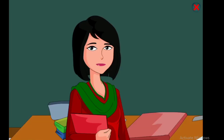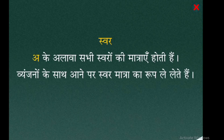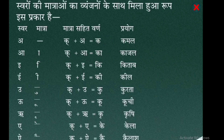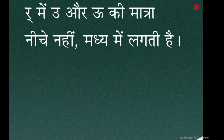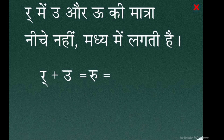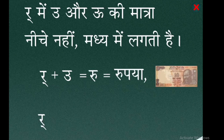Bacchon, ab swaron ki matraen jaante hain. अ ke alawa sabhi swaron ki matraen hoti hain. Vyanjnon ke saath aane par swar matra ka roop le lete hain. Swaron ki matraon ka vyanjnon ke saath mila hua roop is prakar hai. Yeh bhi jaano ki र mein उ aur ऊ ki matra neeche nahi, madhya mein lagti hai — र + उ = रु, र + ऊ = रू।